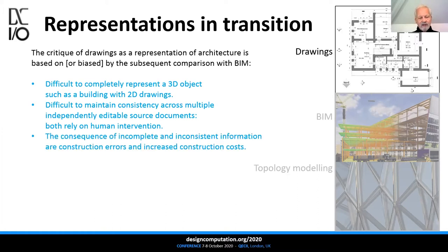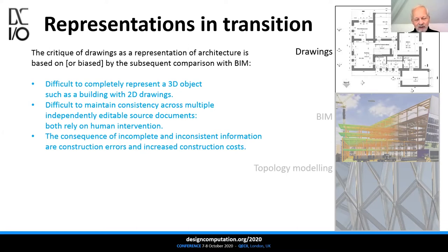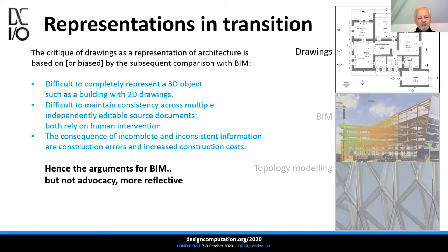From a construction industry perspective, the consequences of incomplete and inconsistent information are construction errors and increased construction costs. It took a long time for the construction industry to work out that it wasn't just dealing with materials and processes — it was dealing with information. And if it's dealing with information, it has to follow some of the rules about how information is created, transmitted, and interpreted. The weakness of drawings was part of the original argument back in the 1980s for BIM.